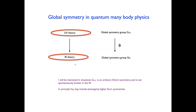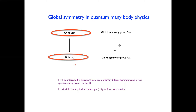Let me make some general remarks on global symmetry in condensed matter physics. We will typically have a UV theory with global symmetry group G_UV. At low energies, depending on which phase or fixed point you're in, there will be an IR theory with a possibly different global symmetry G_IR. In this talk, G_UV is an ordinary zero-form symmetry that is not continuously broken in the IR. The IR may have all kinds of emergent symmetries, including higher-form symmetries, but G_UV is just an ordinary symmetry — which in condensed matter is the appropriate starting point.